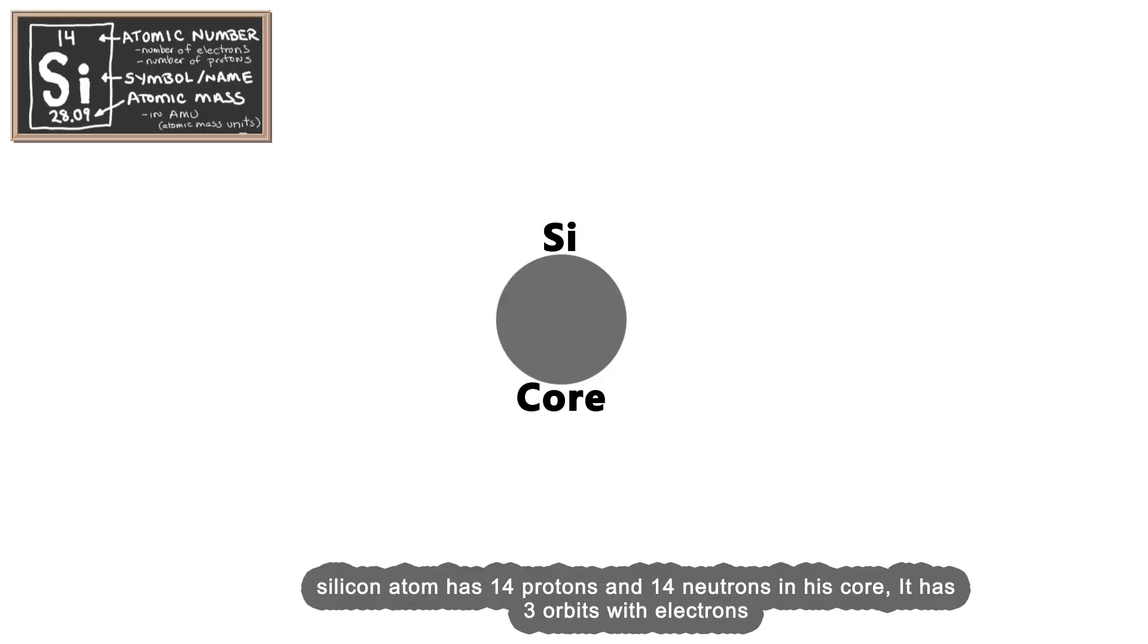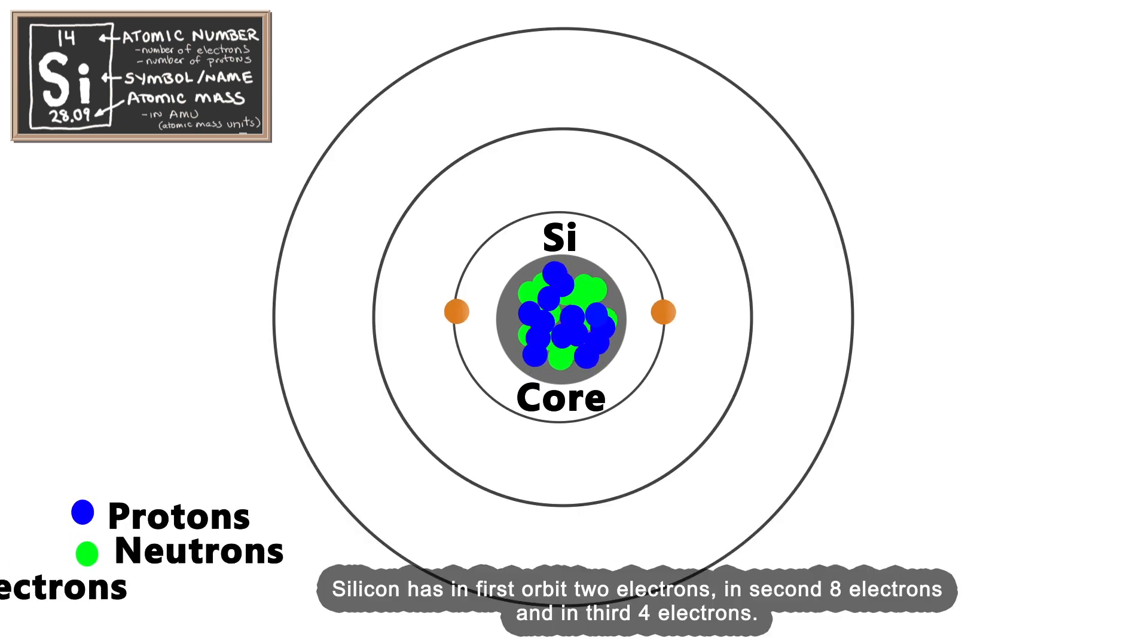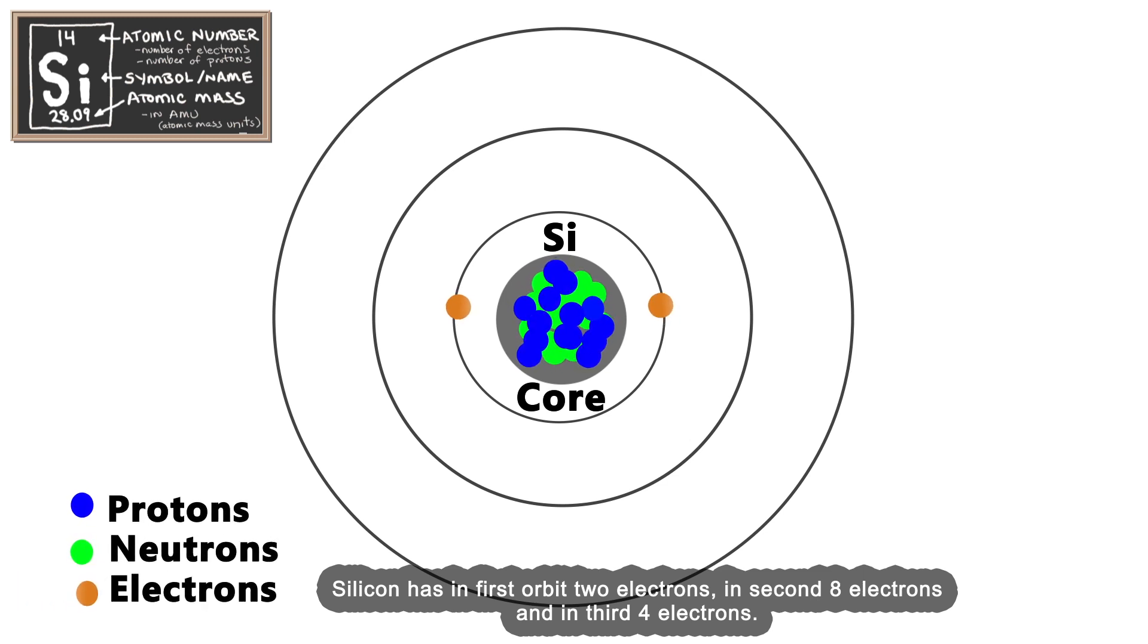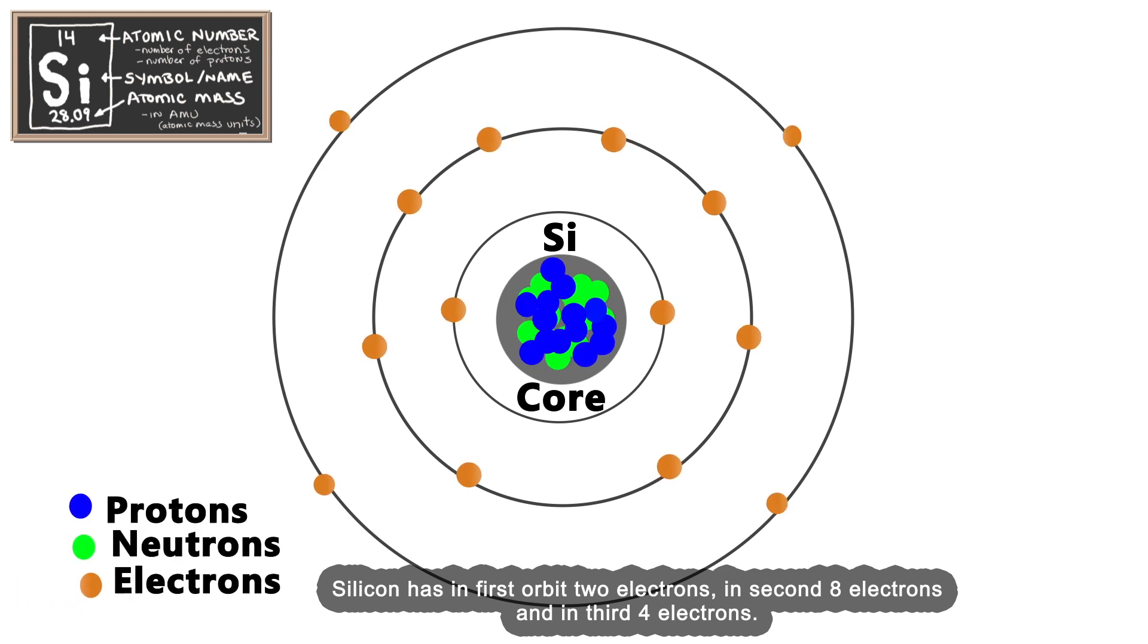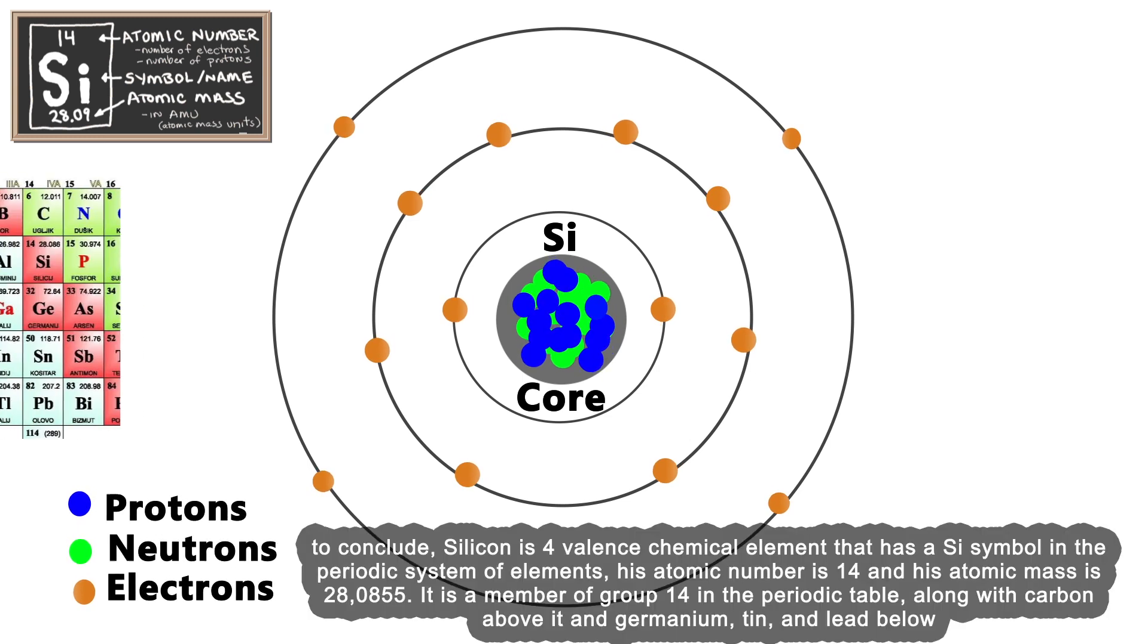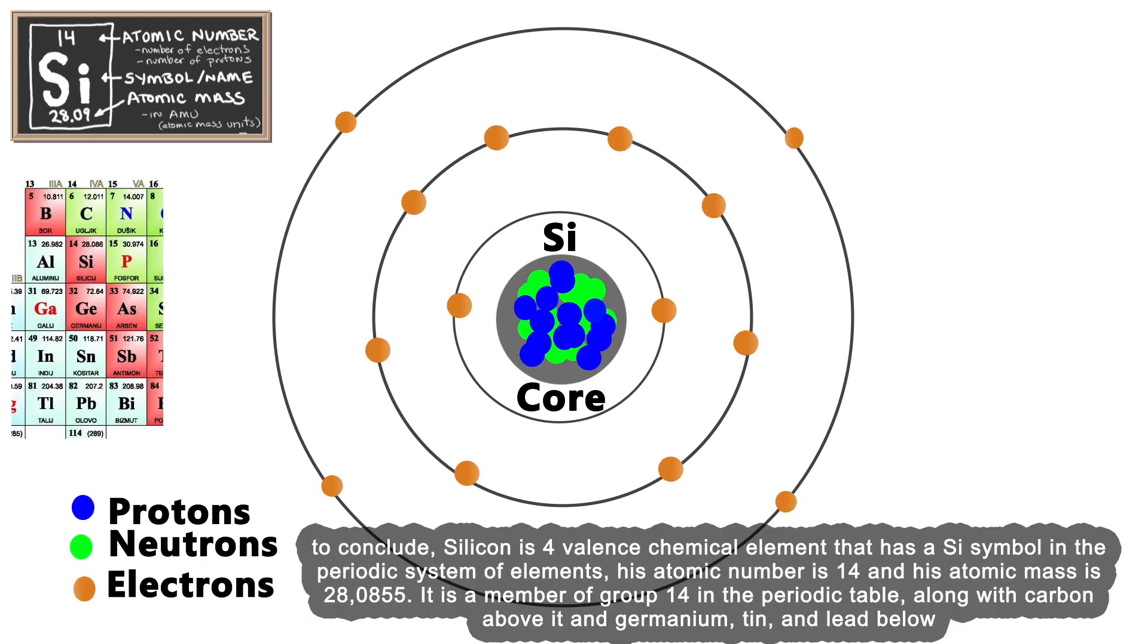A silicon atom has 14 protons and 14 neutrons in its core. It has three orbits with electrons: the first orbit has two electrons, the second has eight electrons, and the third has four electrons. To conclude, silicon is a four-valence chemical element.